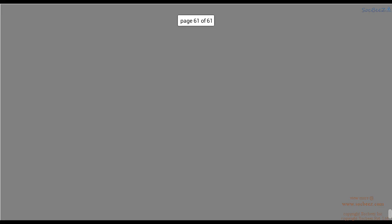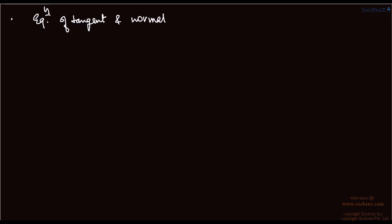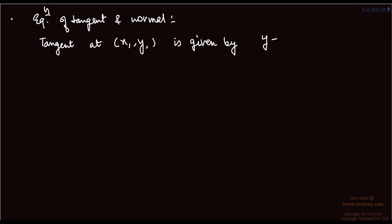Next we are going to learn the equation of tangent and normal. The tangent at point (x1, y1) is given by: Y minus y1 equals f-dash(x1) times X minus x1, where f-dash(x1) is real.